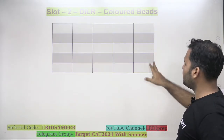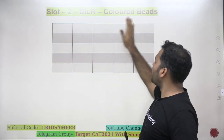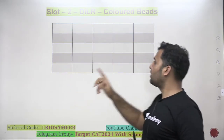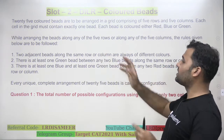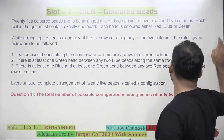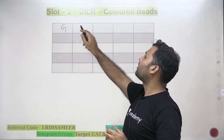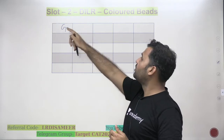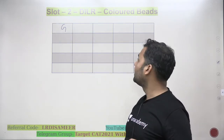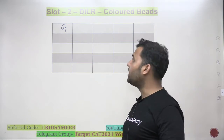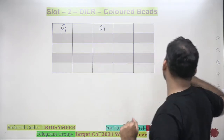So if you make a 5x5 matrix, row-wise or column-wise, no two adjacent cells should have the beads of the same color. That means if I am placing a bead of green color here, I cannot place green here. Two adjacent cells, row-wise or column-wise, should not have the same colored bead. If I am placing green here, I cannot place green in the next cell. That is the first condition.